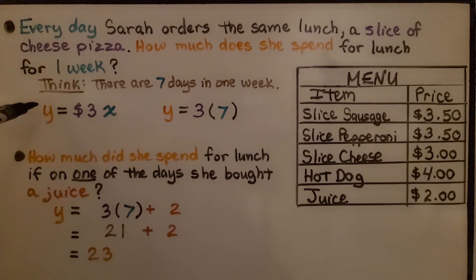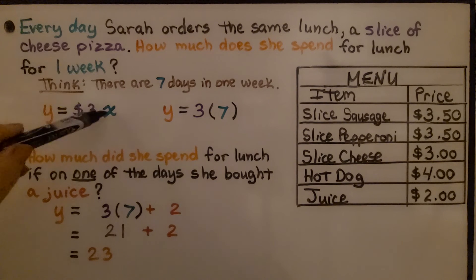Our equation is going to be y, that's how much she spends for a week, is equal to $3, that's the cost of one slice of pizza, and x, that's the number of days. Since there's seven days in a week and we need one week, we're going to do 3 times 7.